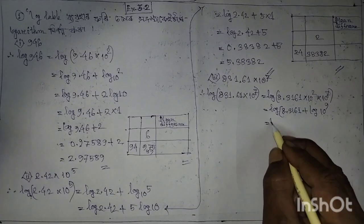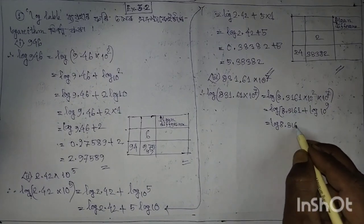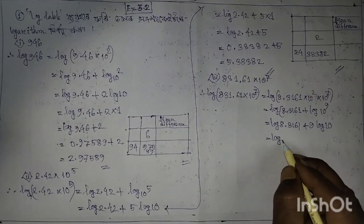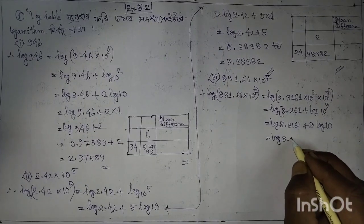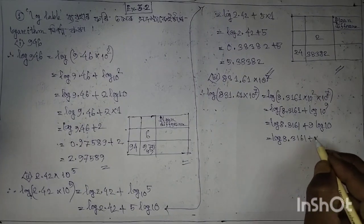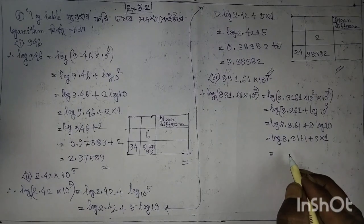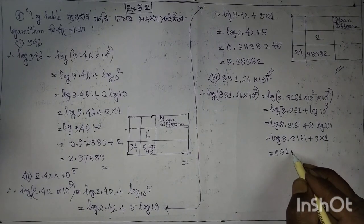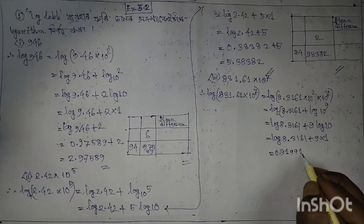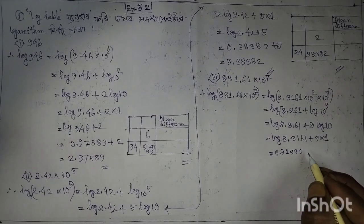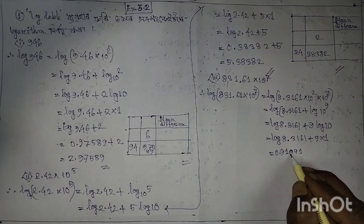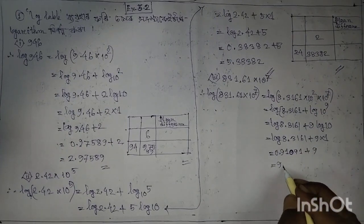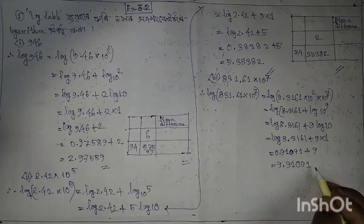Log 8.9 plus 9 log 8. Log 8.2161 plus 9 log 10 equals 0.9109, plus 9 equals 9.9109.